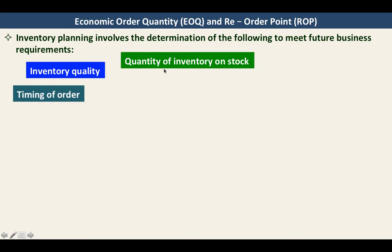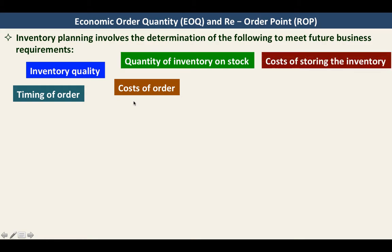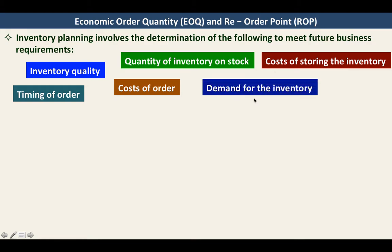The quantity of inventory in stock will determine when is the time to order. We also have to consider the cost of order — how much it will cost us for each order. And we also have to consider the cost of storing the inventory, also called the carrying cost or the holding cost. And we have to consider the demand for the inventory: how many units do we need for a particular month or for a particular year? It depends on the situation.